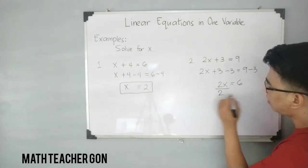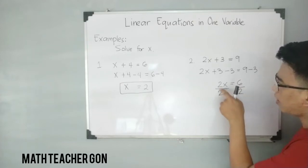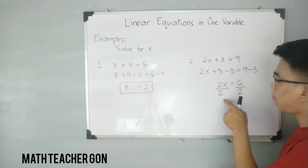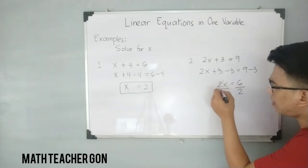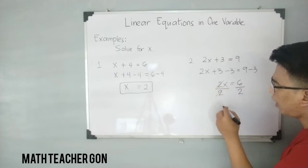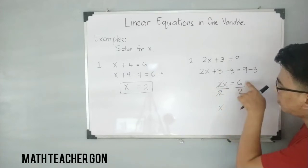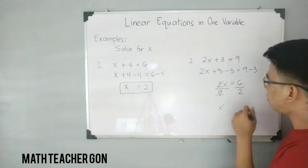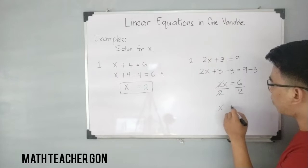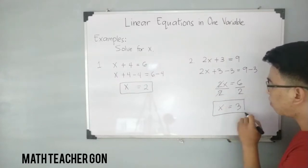We still have 2x is equal to 6. All you need to do is divide both sides by 2. Two divided by 2 equals 1 — you can simply cancel it out — leaving x, and 6 divided by 2 gives you 3. So x equals 3. This is the solution for item number two.